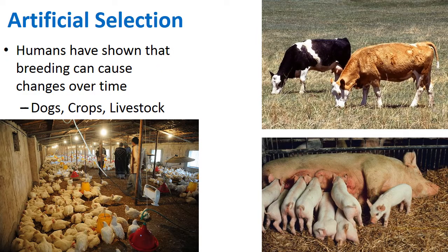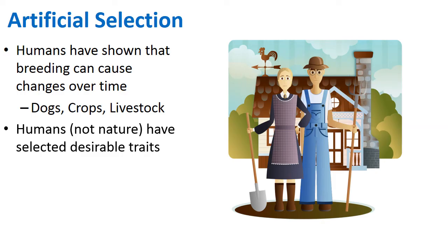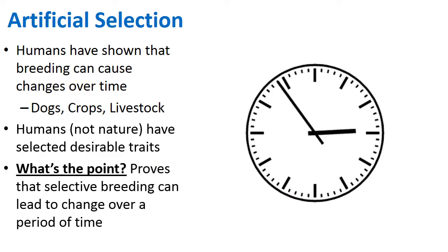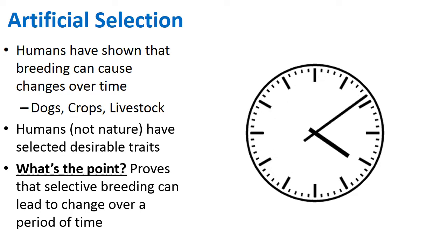We've been able to produce bigger and meatier livestock — cows, chickens, pigs — over the centuries by controlling which ones were able to reproduce. So humans have actually caused change to many organisms on this planet. In artificial selection, humans are the driving force, selecting the desirable trait we want to enhance. The whole point is that by controlling how organisms breed, over time this can lead to change.